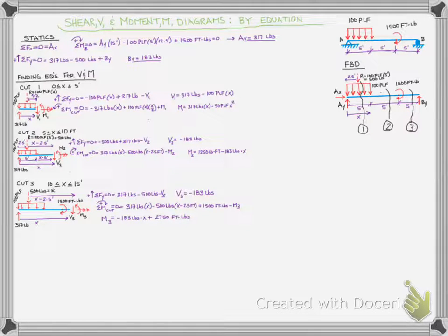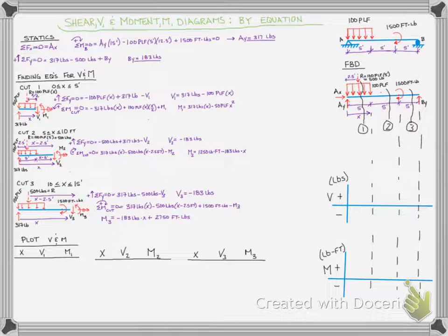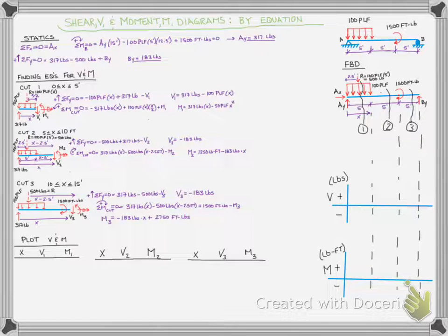Now we have our three shear equations and three moment equations. To get ready to plot, I've created initial plots for the shear and moment diagrams — a horizontal line from zero to L aligned with the free body diagram — with the five, ten, and fifteen foot locations marked. Units are labeled, positive values plotted above and negative below the line. I've also created a table for entering x values to read out shear and moment from each cut's equations.